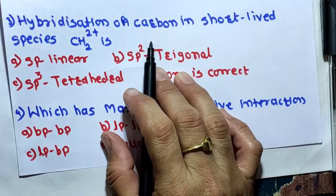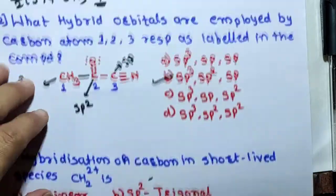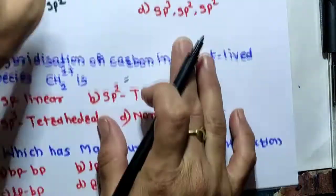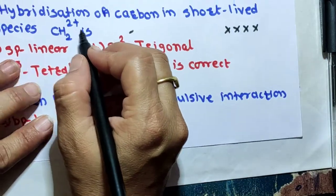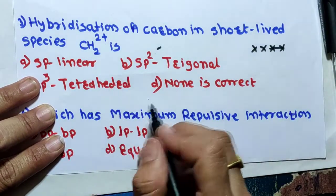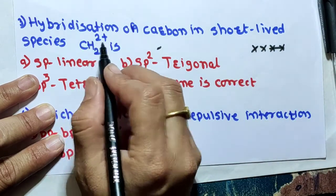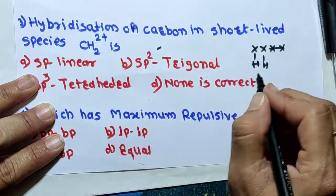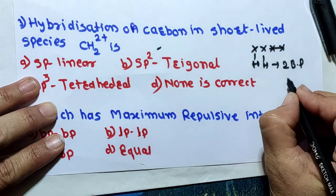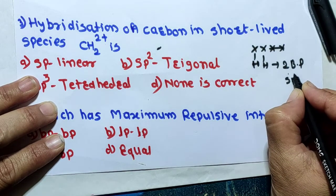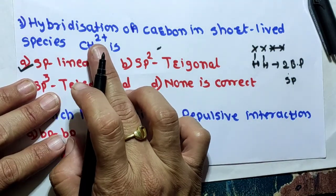Next MCQ: hybridization of carbon in the short-lived species CH₂²⁺. Carbon contains four valence electrons. For the 2+ charge, we subtract two, so it contains only two valence electrons. There are two hydrogen atoms bonded, giving two bond pairs. With two bond pairs, the hybridization is sp hybridization — that is s¹p¹, giving two bond pairs. Option one is the right answer.